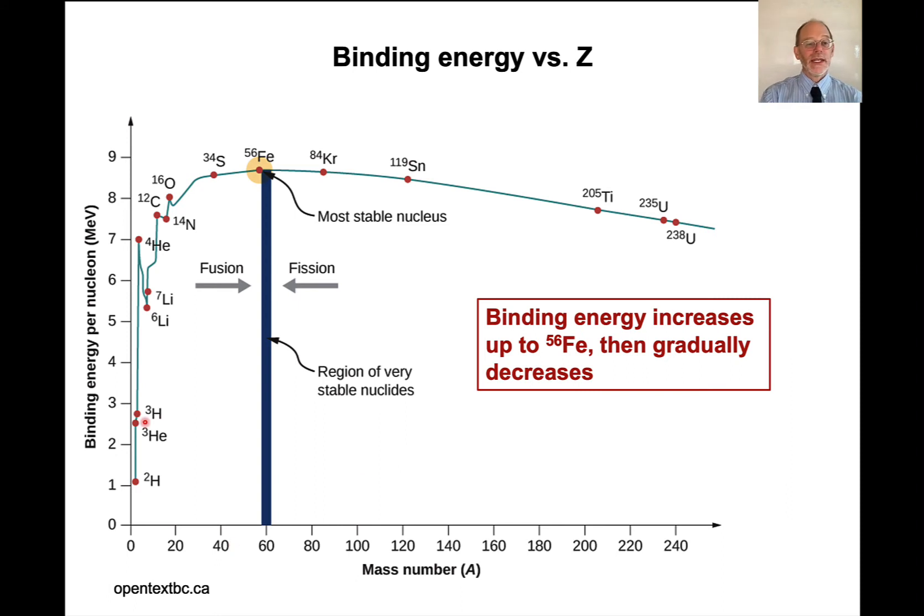Here's helium-4, 7, well, it's plotted as 7, 7.3, should be up here, mega electron volts per nucleon. And you can see deuterium, tritium, and helium-3 all have lower binding energies than helium-4. So these are unstable with respect to helium-4. And so these can fuse to create helium-4 and release energy. Binding energy increases all the way up to iron-56, and then it gradually decreases off in this direction.